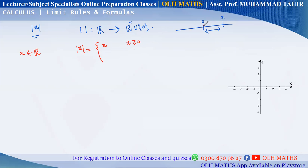If x is 0, then the absolute value will be 0. If x is positive, then x is greater than 0, and we can write x minus 0, so the absolute value equals x.